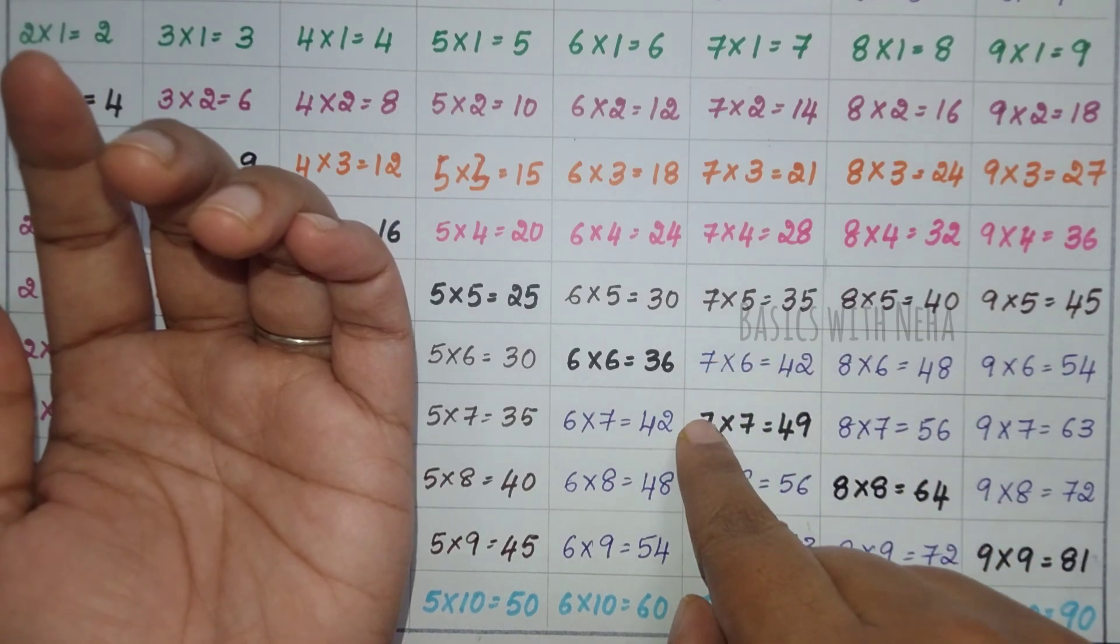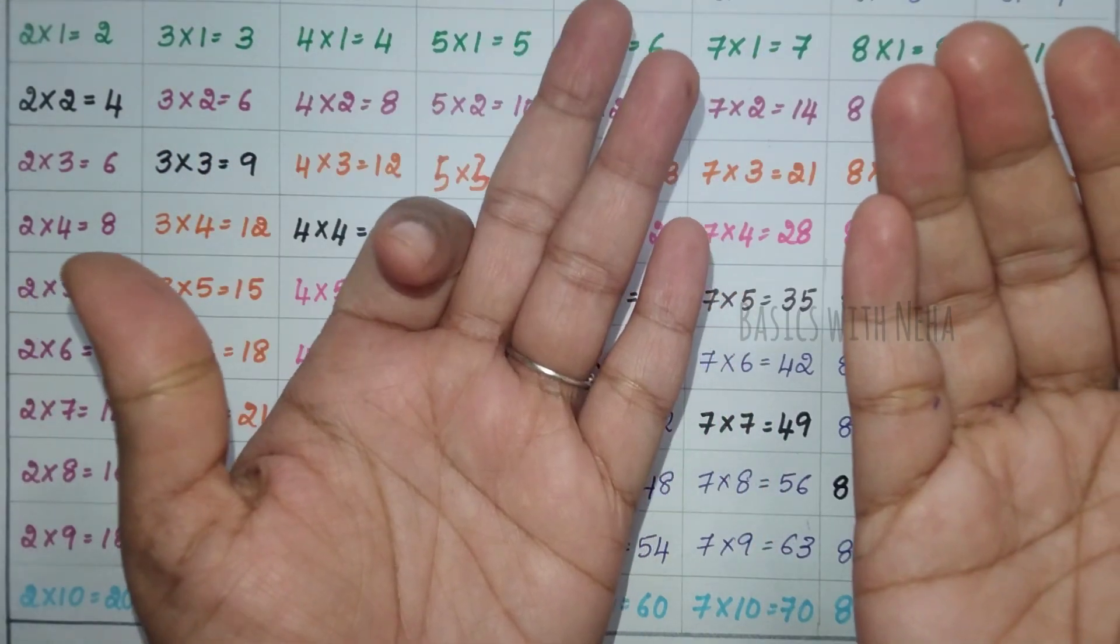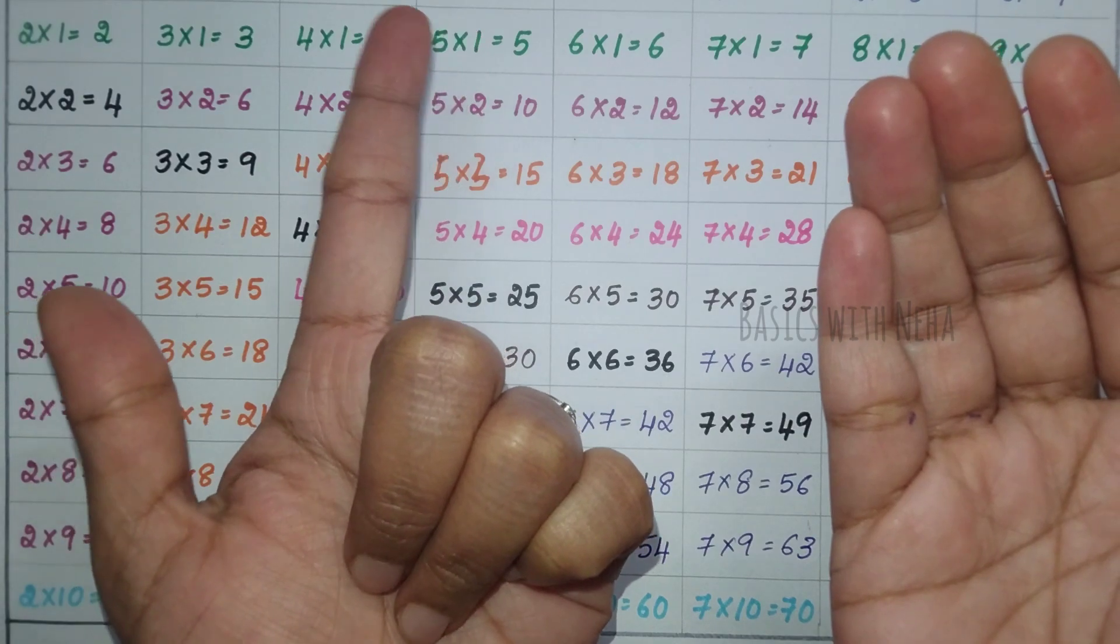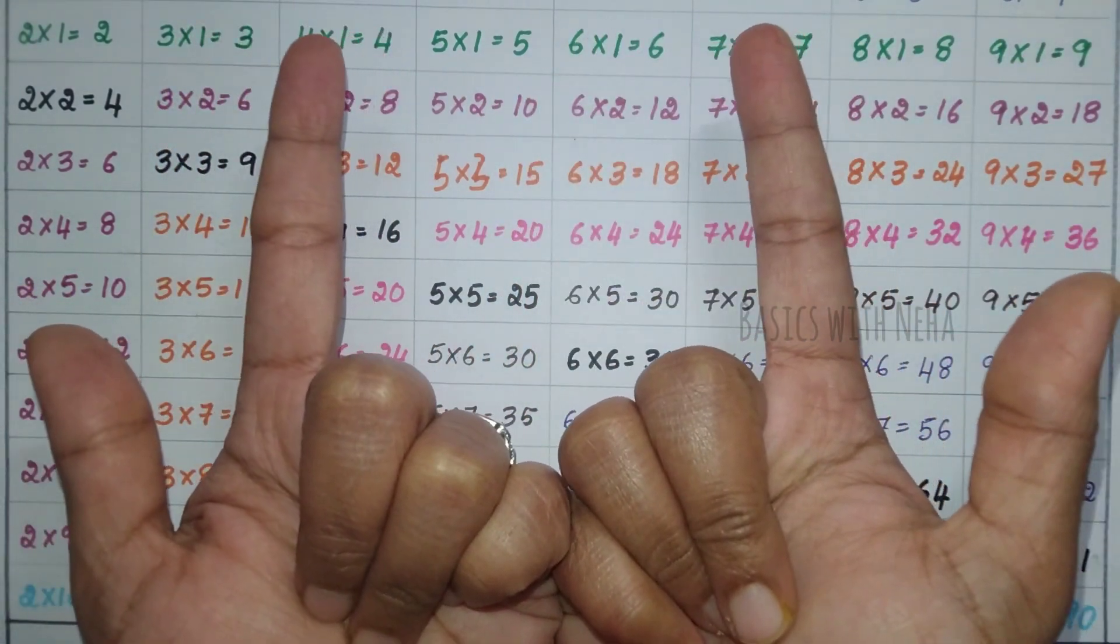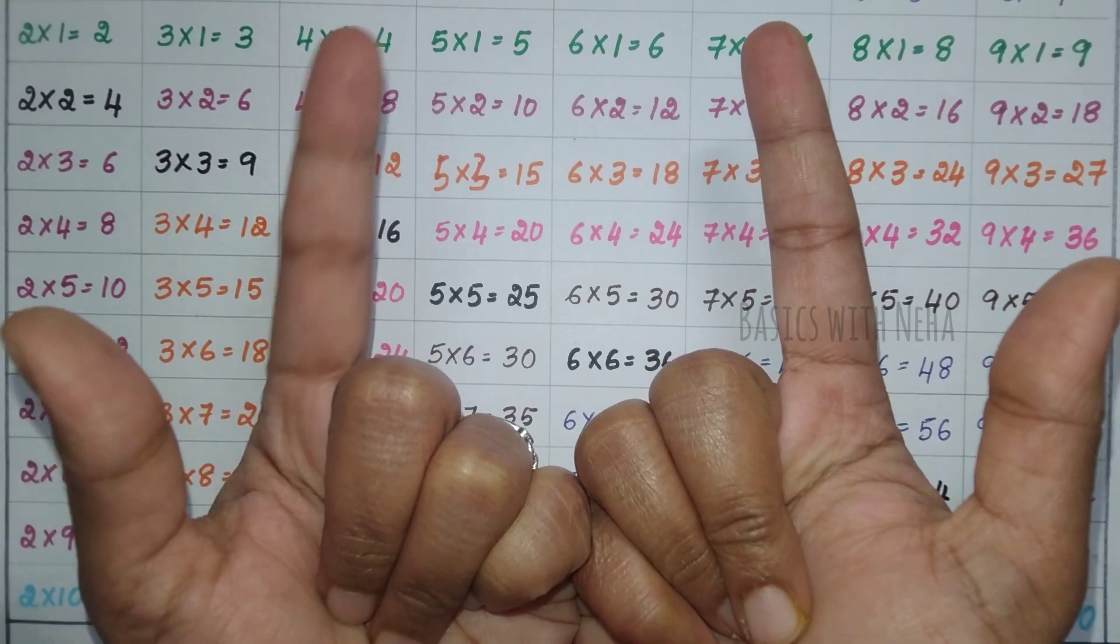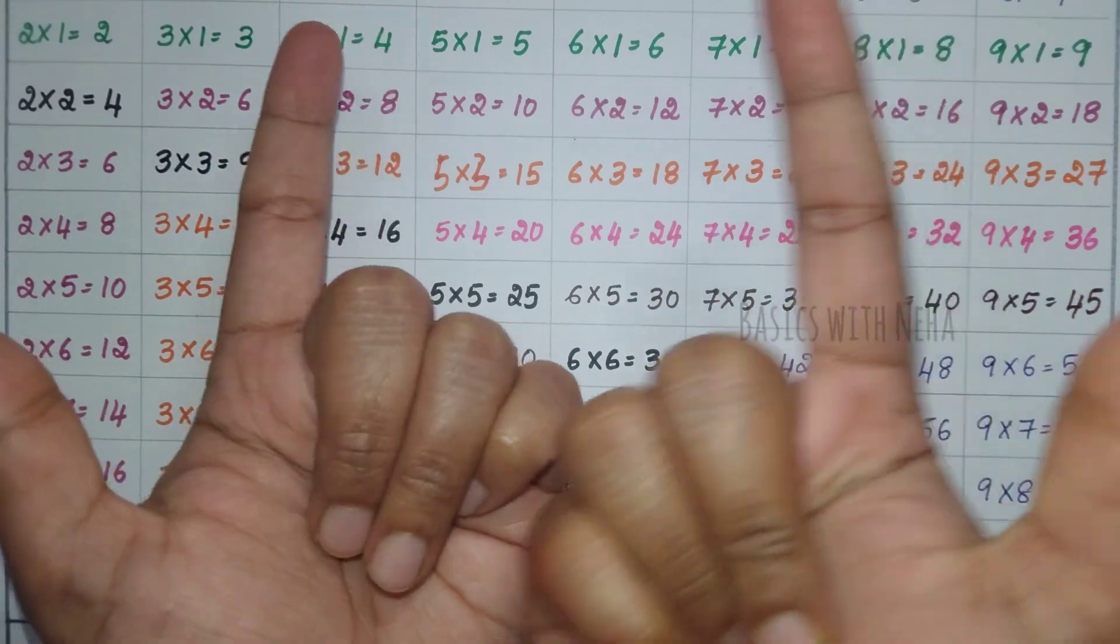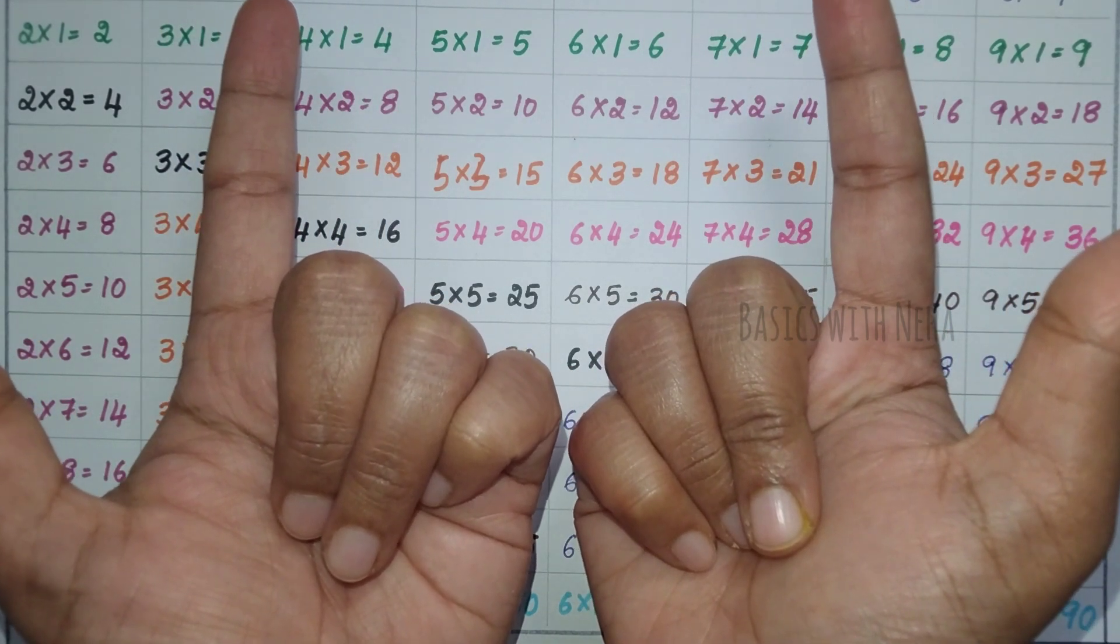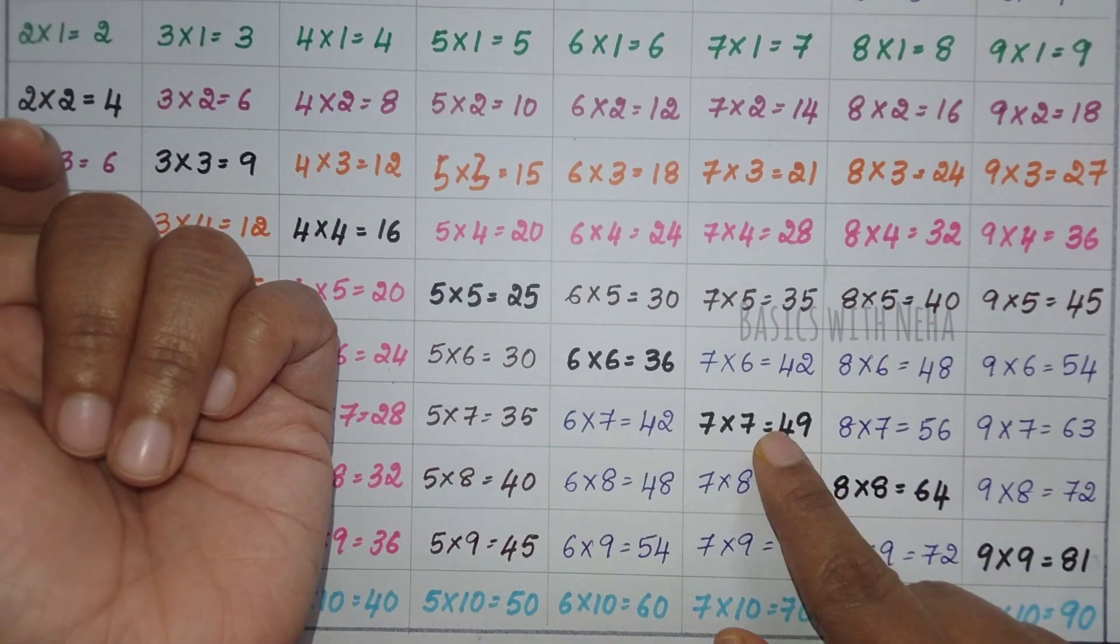For example, if I have to dodge 7×7s are 49, it's 6, 7. I am going to keep these two fingers open and close the rest. Now, if you add these four, it is 4. One, two, three, four - that's 4. Three into three, 3×3s are 9. So the answer will be 49. You can see the answer is 49.